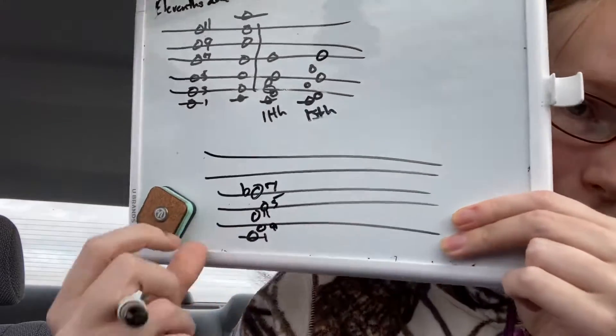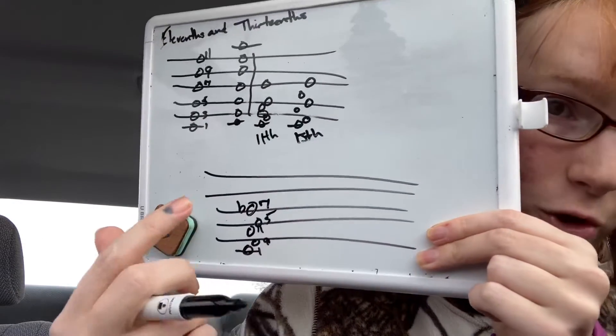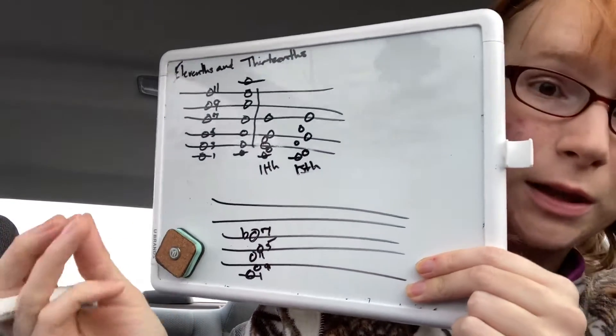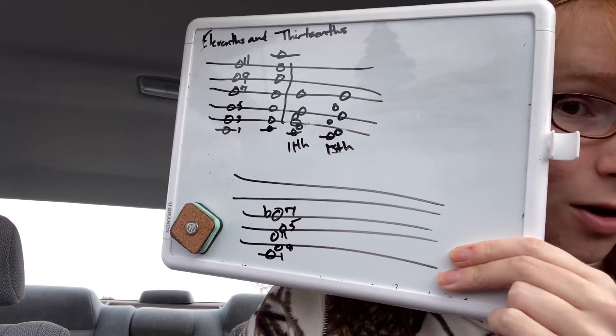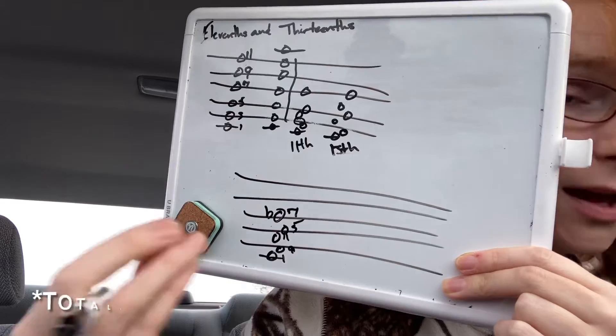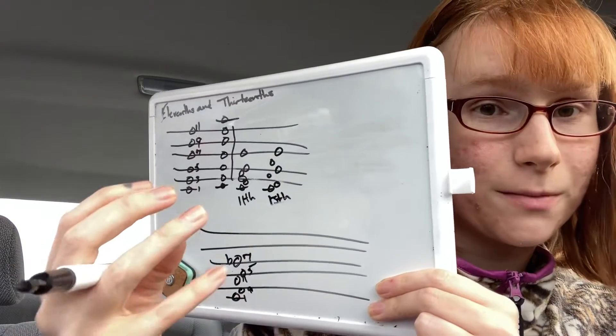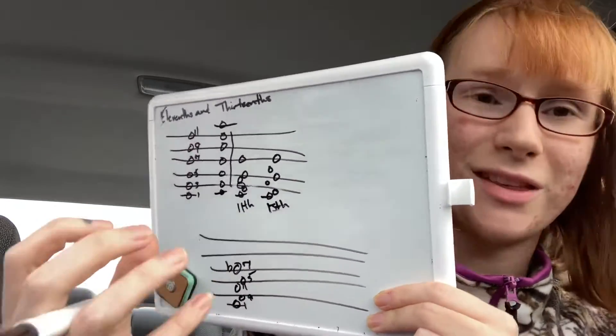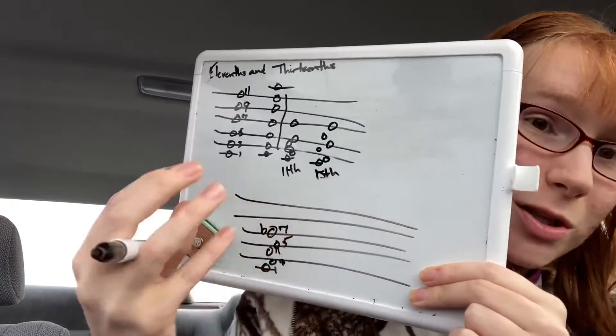So the 11th chord can be in any kind of inversion, and most of the time it will need the 7th note, and the 9th note, and the 3rd note... actually a 5th note, to keep it more stable.